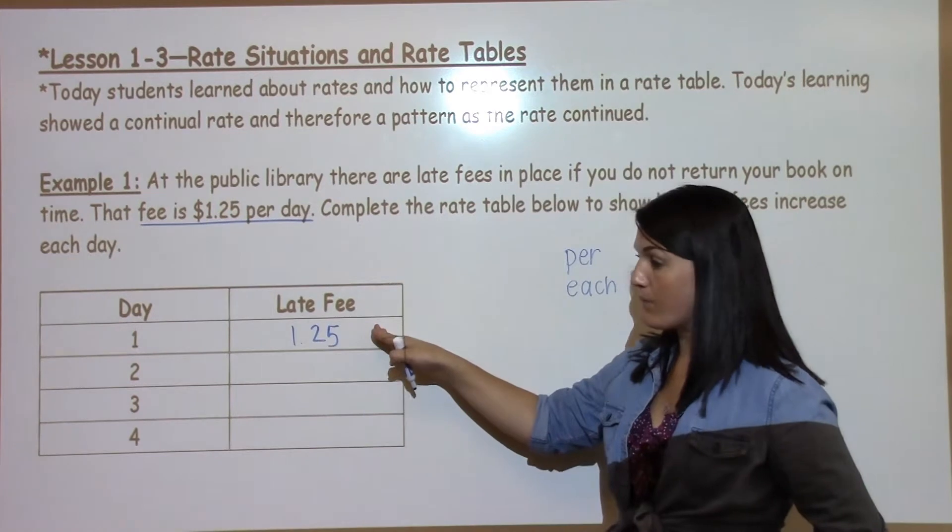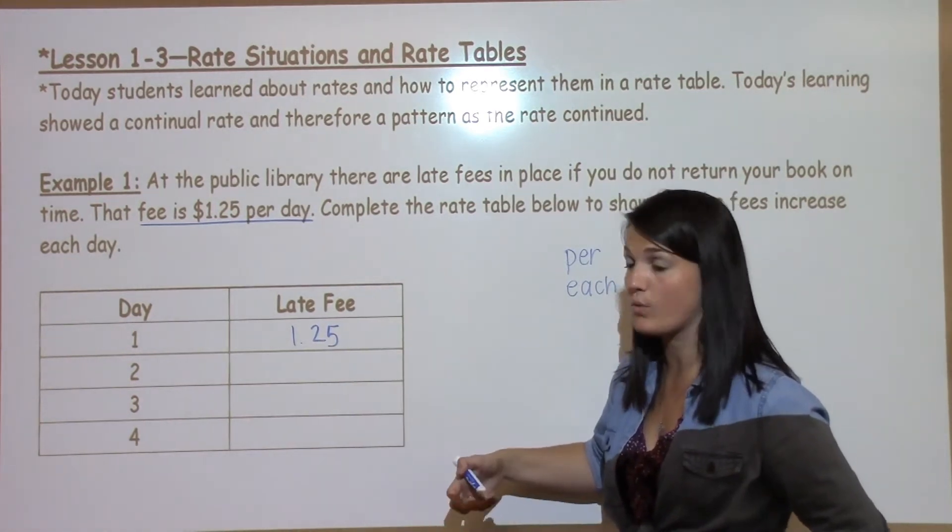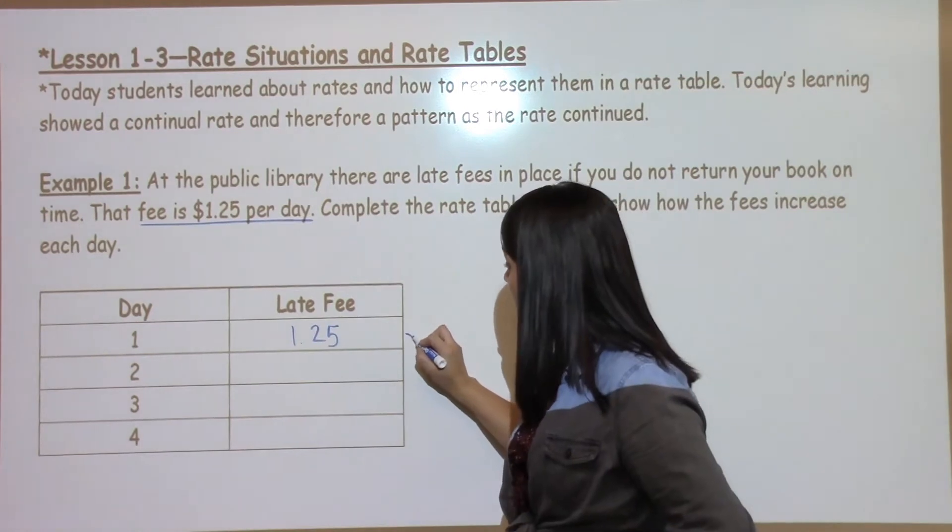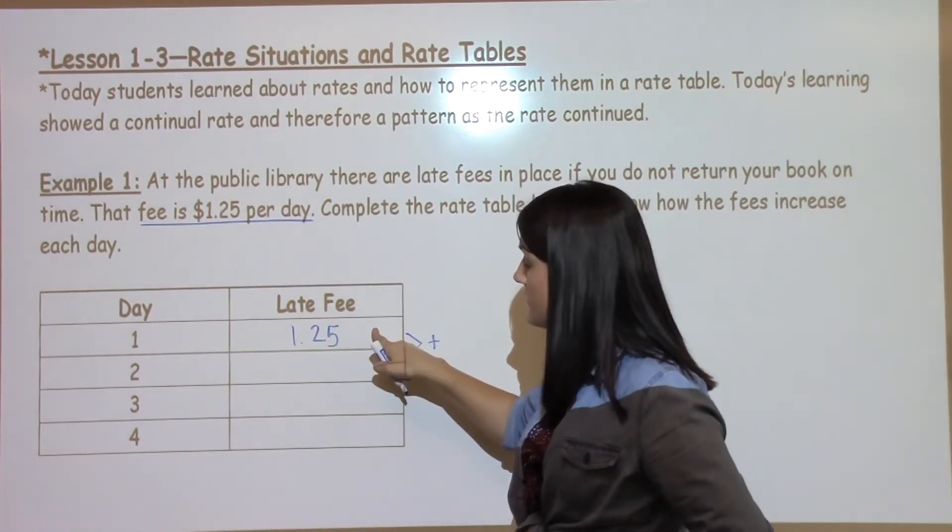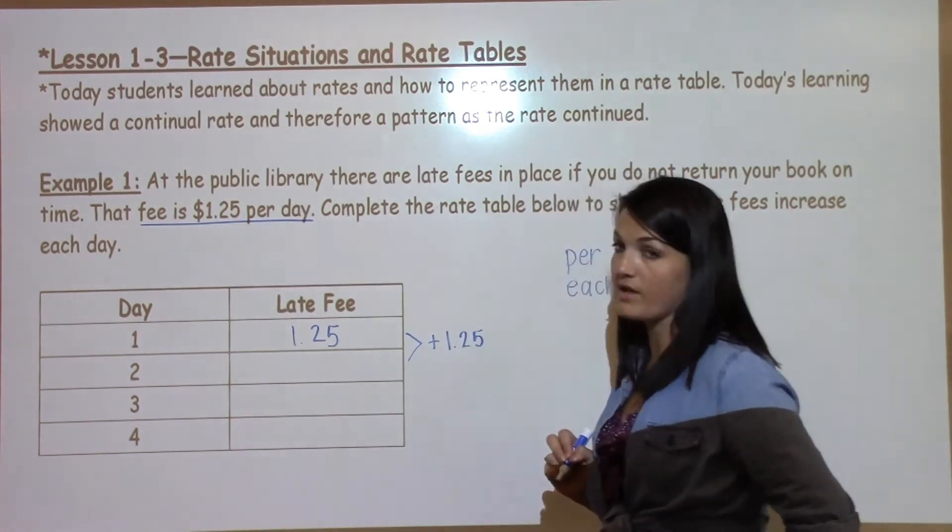To complete my rate table I know that each day it's going to get bigger by $1.25. So from this box to this box on my rate table I should be adding $1.25.